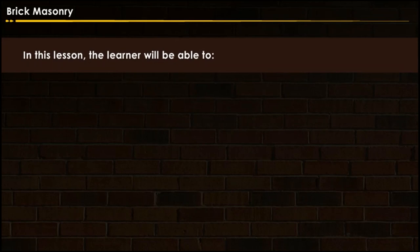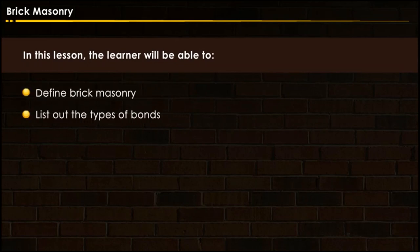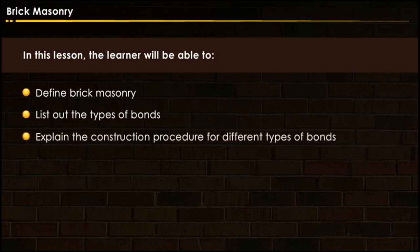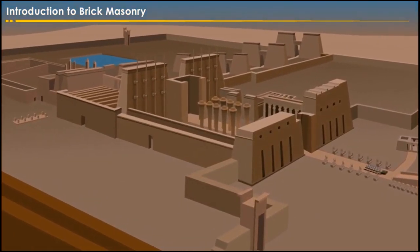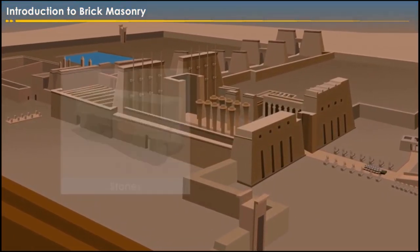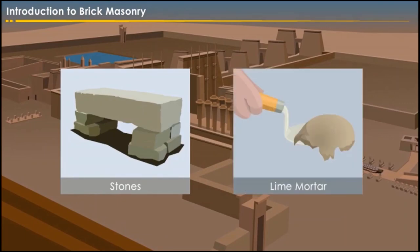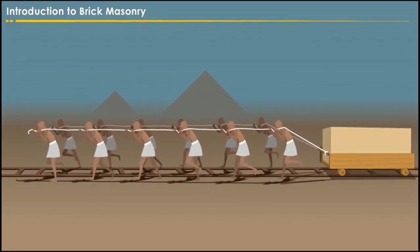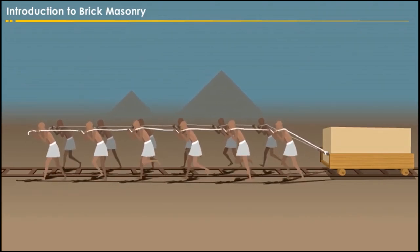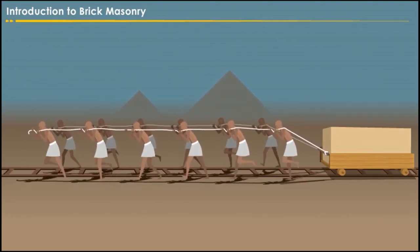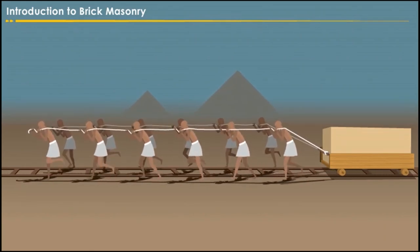In this lesson, the learner will be able to define brick masonry, list out the types of bonds, and explain the construction procedure for different types of bonds. In the ancient period, people constructed buildings with the help of stones and lime mortar. But shifting the huge stones was a very tedious process, as sledges were pulled by a team of laborers and the tracks were kept waxed in order to reduce friction.